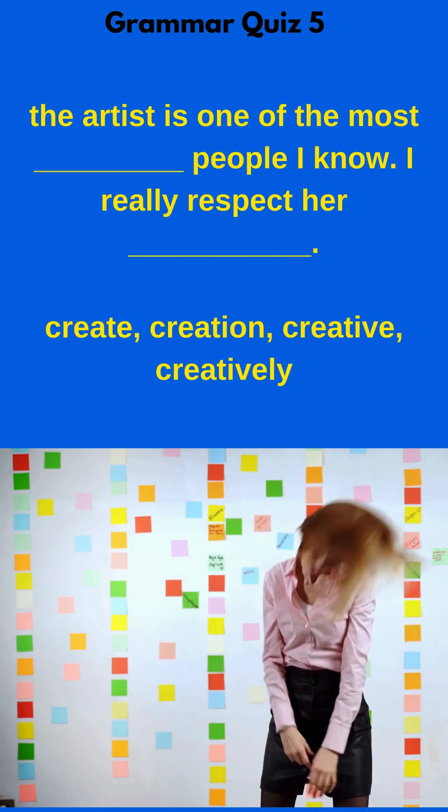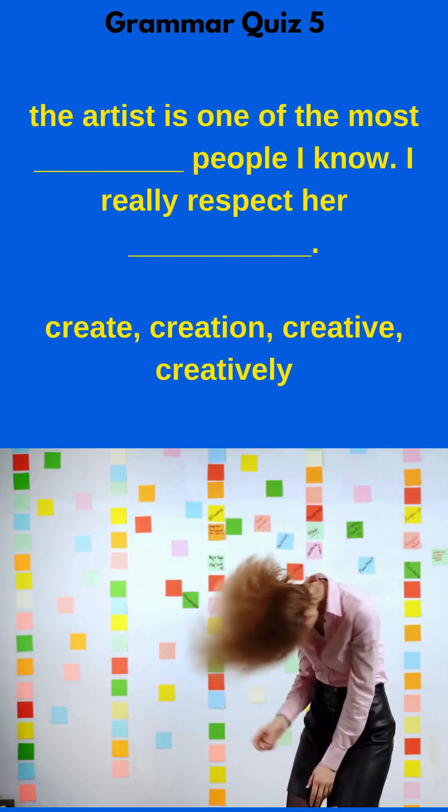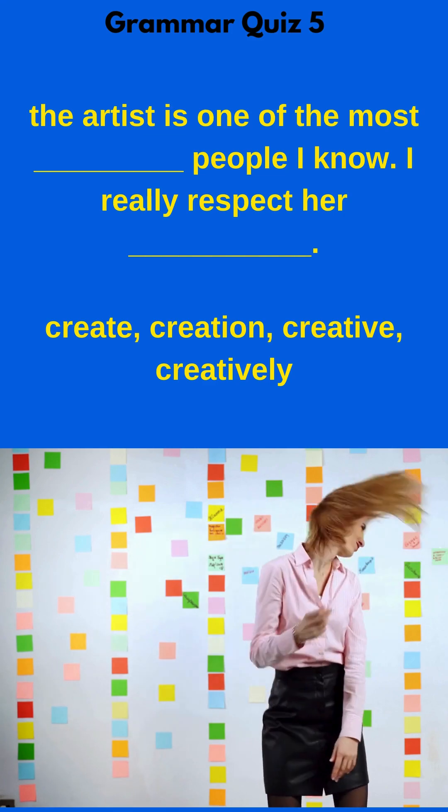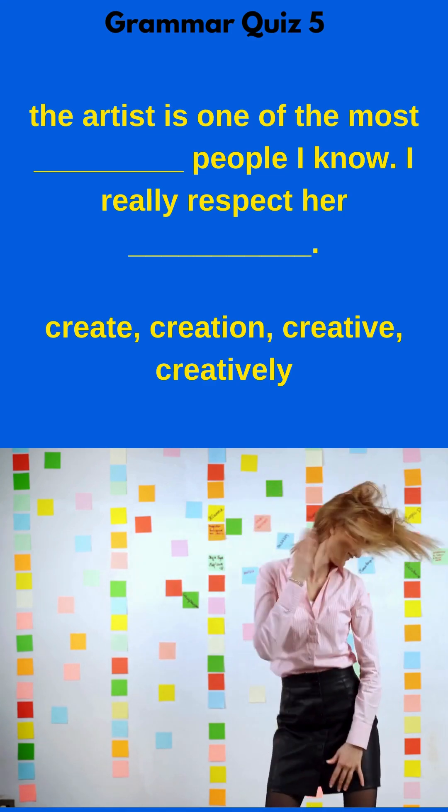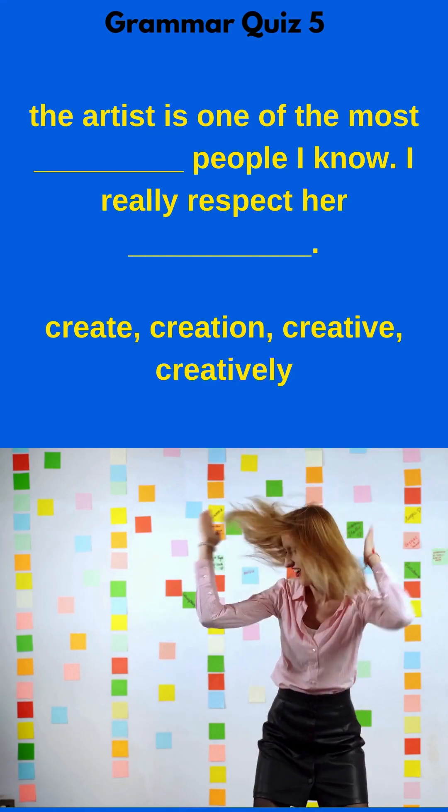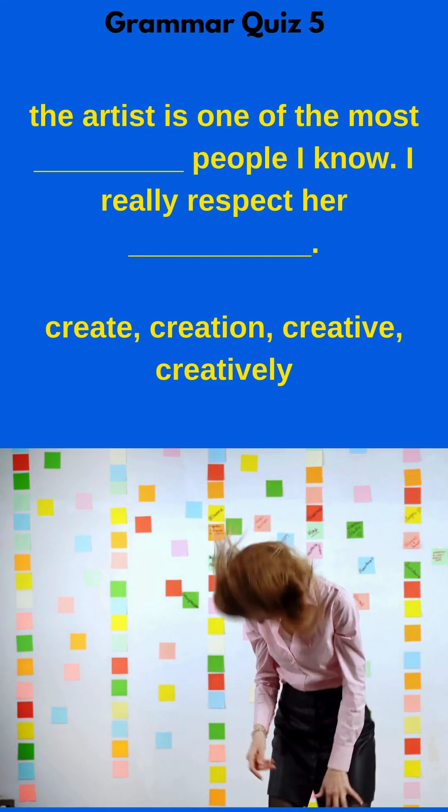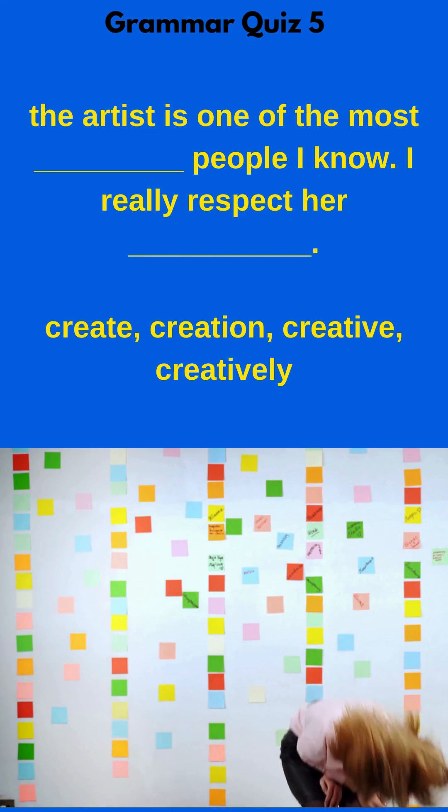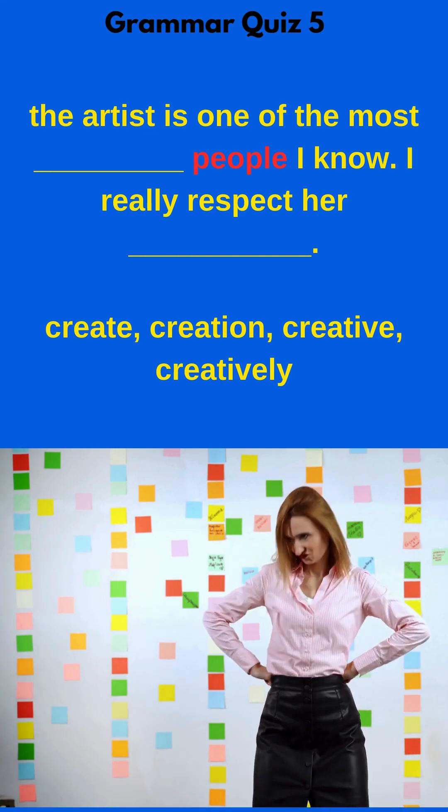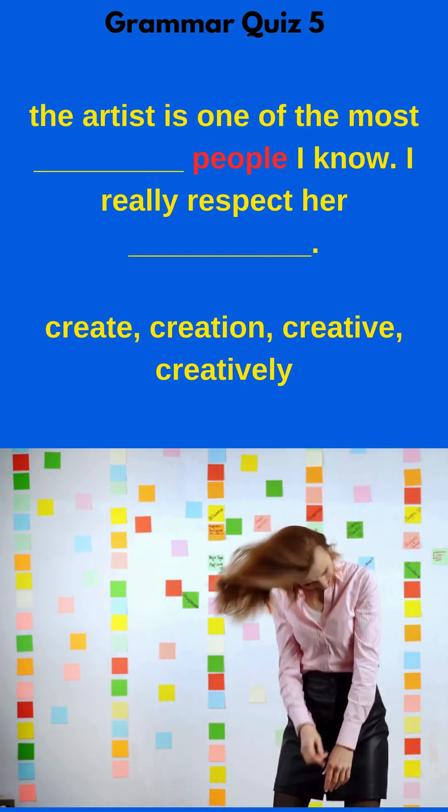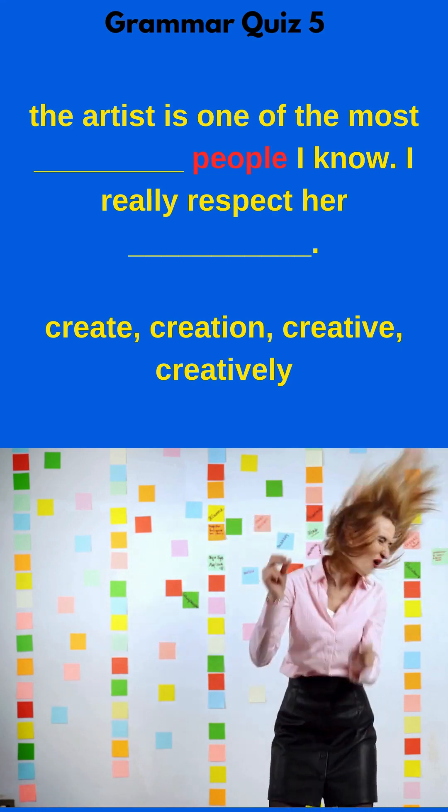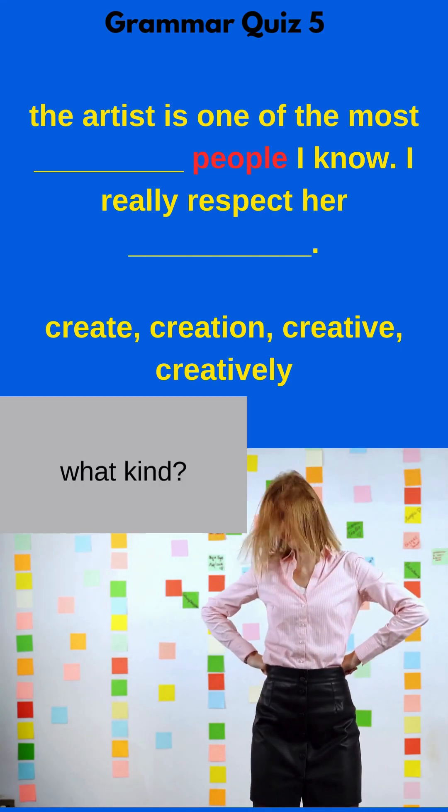Fill in the blank with the correct part of speech. The artist is one of the most blank people I know. I really respect her blank. In the first blank, we have 'the artist is one of the most blank people.' In that situation, I see 'people,' and I want to say, what kind of people? If the word answers the question 'what kind,' I need an adjective.